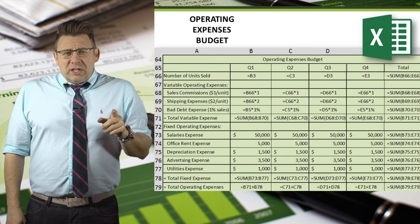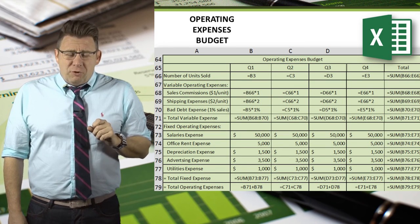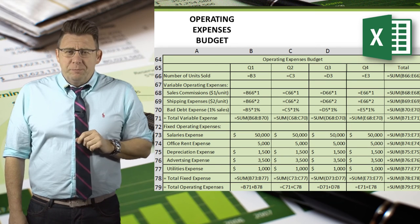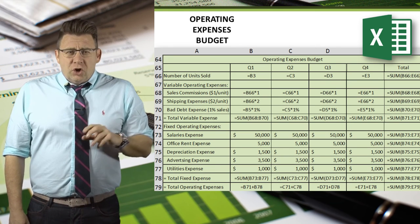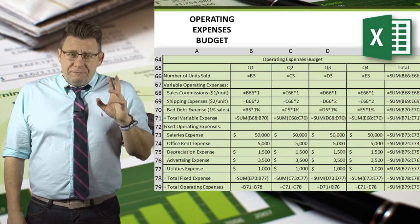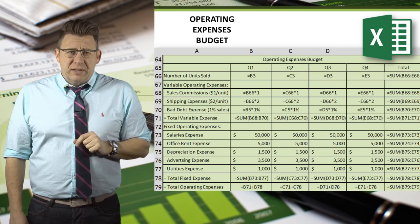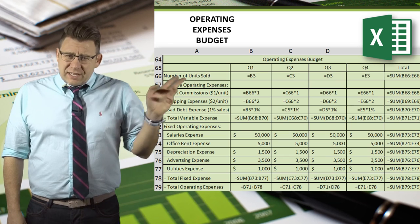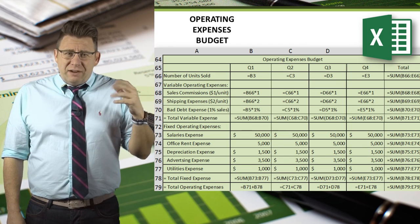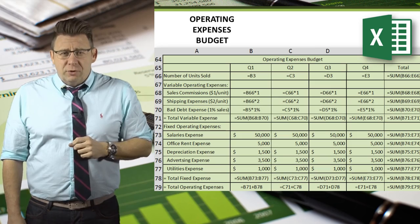Additionally, sales commission and shipping expense are formulas using given rates times sales volume. Total variable operating expenses, total fixed operating expenses, and total operating expenses are formulas as shown here. Finally, some of the numbers I've just assumed because I want to keep the examples straightforward.